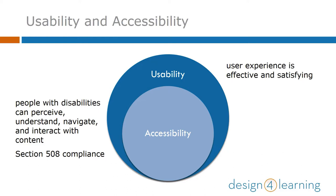Accessibility is focused on making sure that people with disabilities can perceive, understand, navigate, and interact with the content. In fact, some institutions may be required to comply with standards like Section 508 of the Rehabilitation Act of 1973.